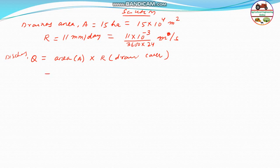Therefore calculating Q, that will be equal to area is 15 into 10 to the power 4 and R is 11 into 10 to the power minus 3 divided by 3600 into 24. This gives meter cube per second because meter square times meter per second gives meter cube per second.